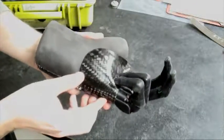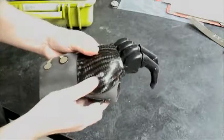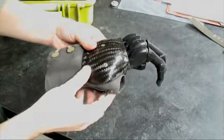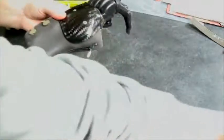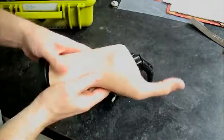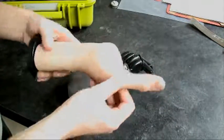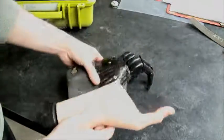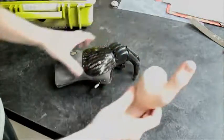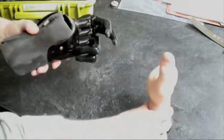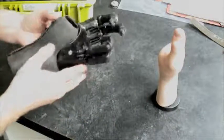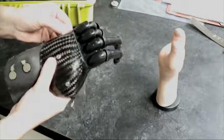This is the I-Limb Digit. It's a partial hand prosthesis, and essentially it's for, in this case, a patient that is really missing or maintaining its thumb only. The digits then replace what's maintained there, so what we have is a battery-powered system.